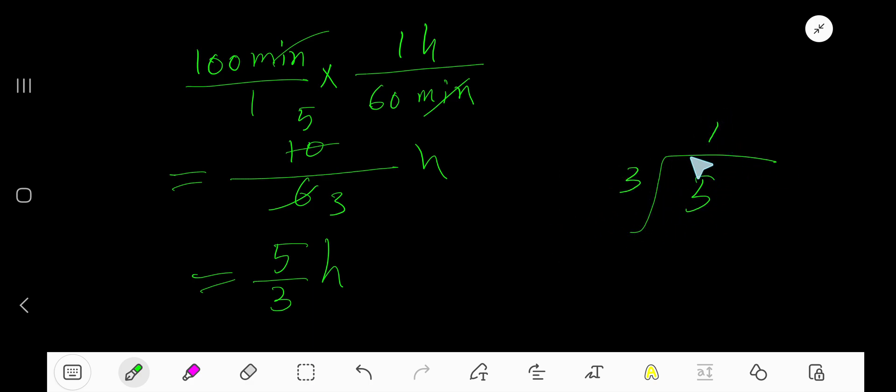3 goes into 5 one time. One times 3 is 3. Subtract, we get 2. Take your decimal and add 0. Bring down the first 0. But before the zero there is a decimal, the decimal must come to the quotient directly.